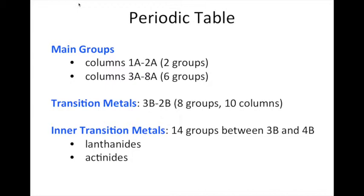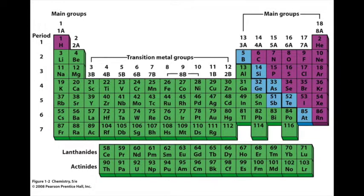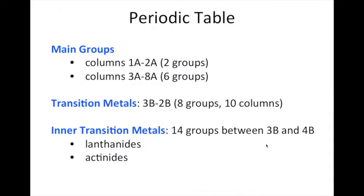The transition metals and inner transition metals are basically the ones in between the main group elements. The transition metals are from 3B all the way to 2B, so they would be this block of elements which tend to be metals right in here. And then the transition metals are 14 groups in between group 3B and 4B. Those are called the lanthanides and actinides.